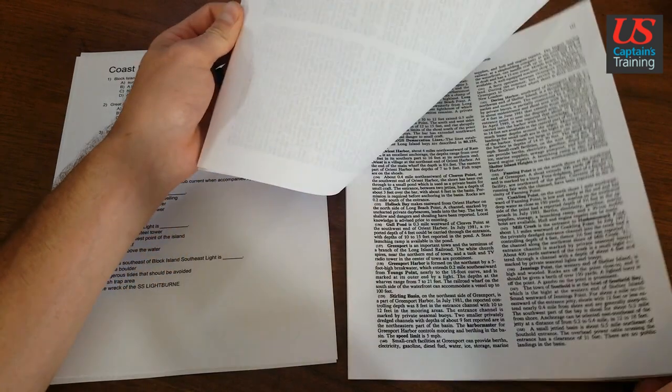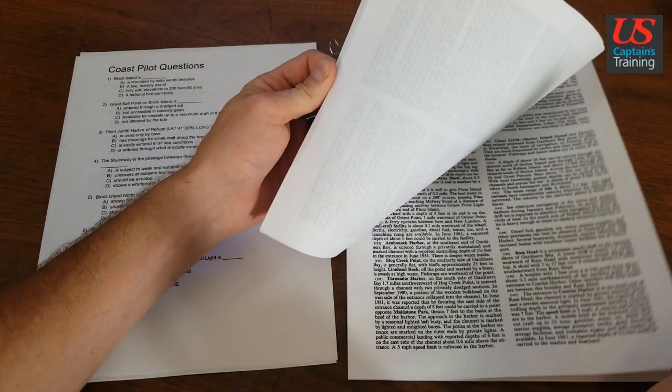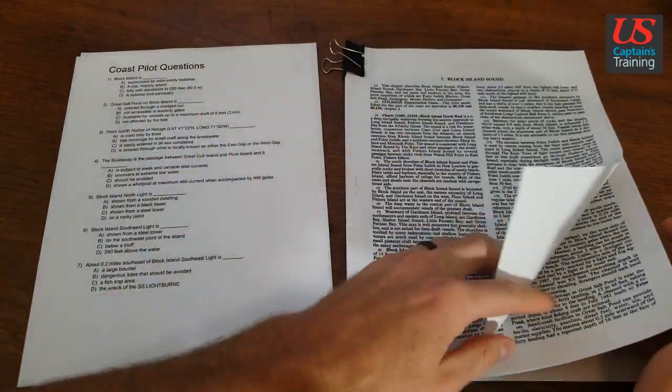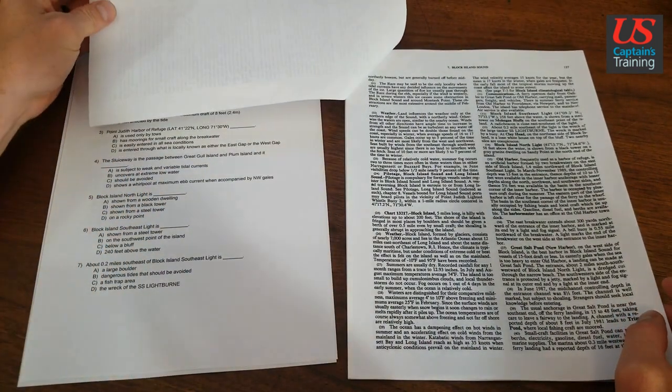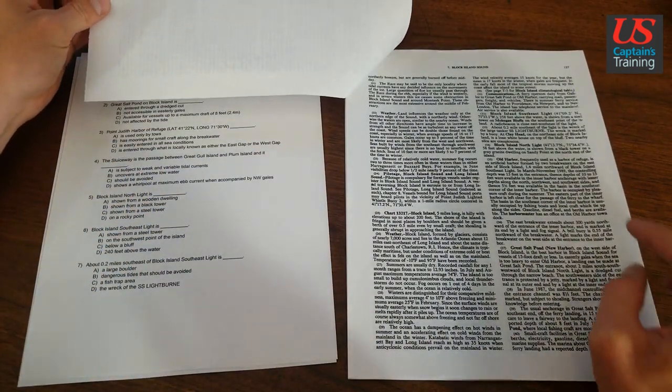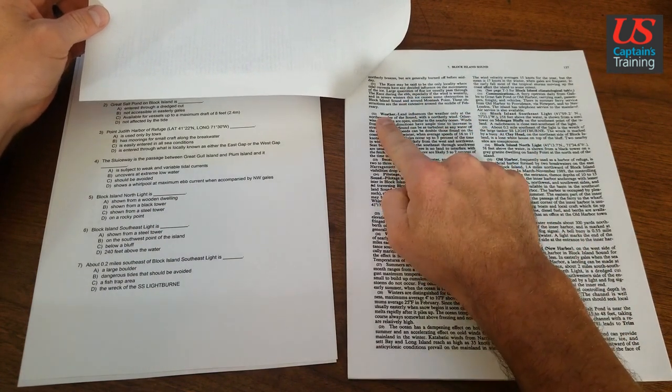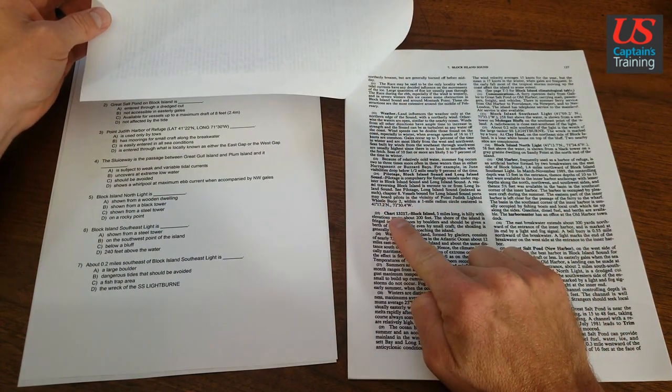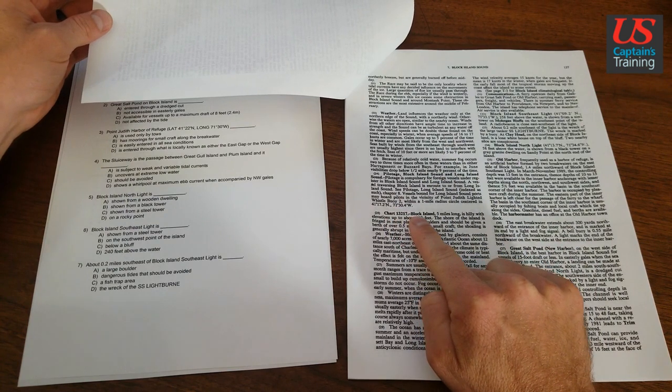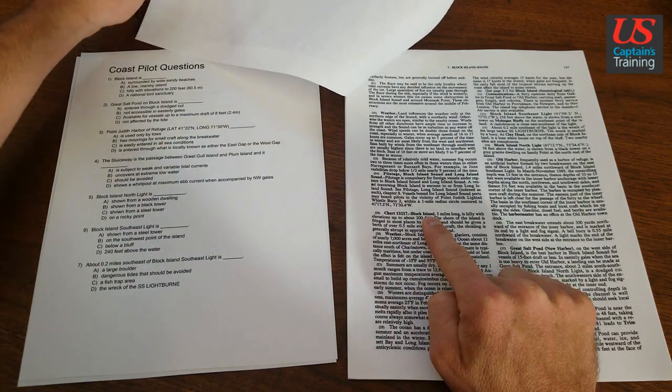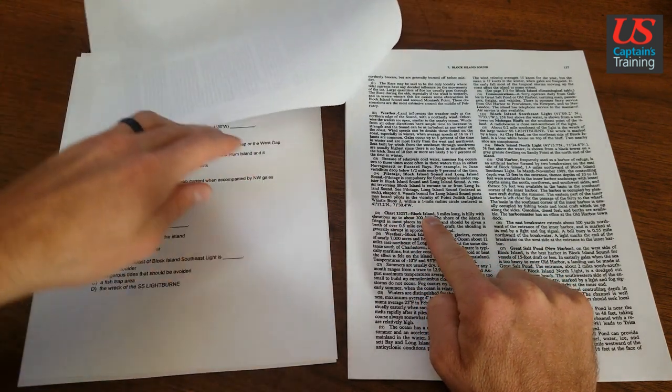137. Here we are on page 137 and we're looking for Block Island. So in bold letters we have some headings: Weather Chart 13217, Block Island.